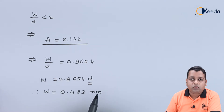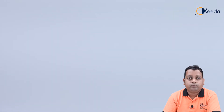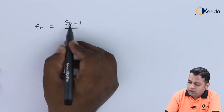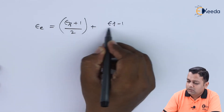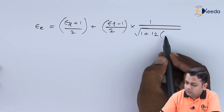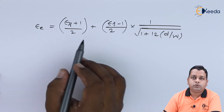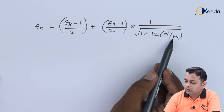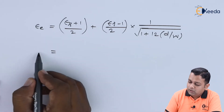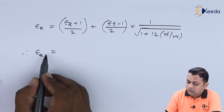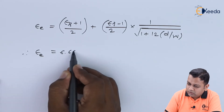Next we need to calculate the effective value of the dielectric constant. The effective dielectric constant is given by: epsilon_e = (epsilon_r + 1)/2 + (epsilon_r − 1)/2 × (1 / sqrt(1 + 12·d/w)). Here epsilon_r is known and d/w is the inverse of w/d. Upon substitution of epsilon_r and w/d, the effective dielectric constant epsilon_e is equal to 6.665.